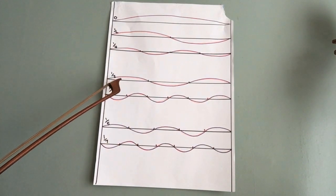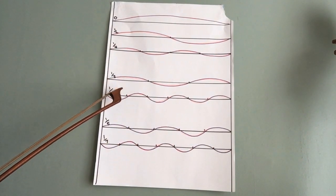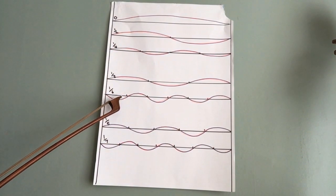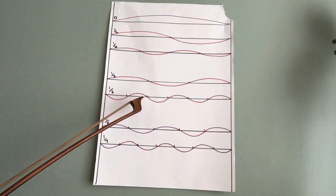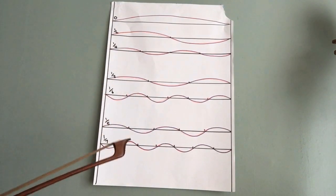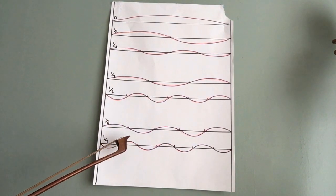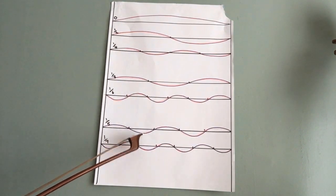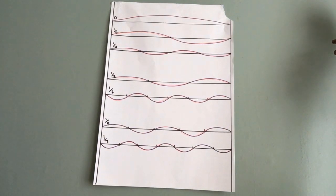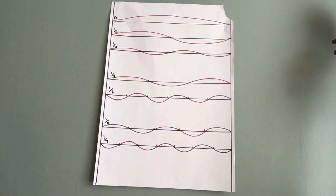So we have a quarter, a third, a sixth — which is half of a third — a fifth, and a seventh. Let's see what these sound like on the double bass.